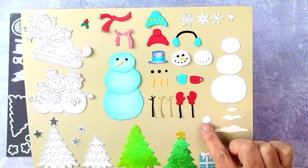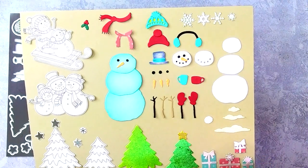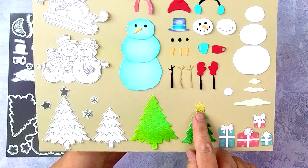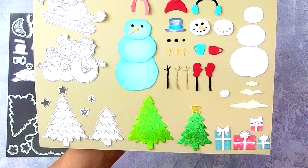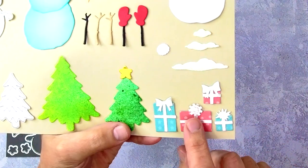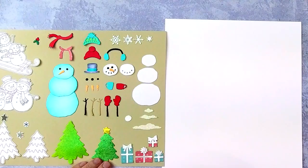There are also the pom-pom from the hat can double as a snowball, and then there are snow drifts. The trees can be stamped and die-cut or die-cut on their own. There are also fun little presents with ribbons and bows that you can die-cut as well.